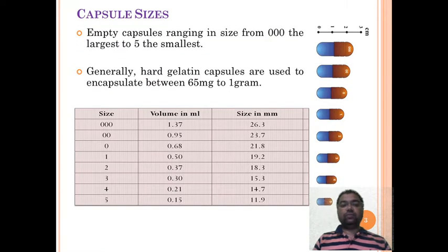Now firstly look at various sizes of capsules. Hard gelatin capsules range in size from triple zero, the largest, to five, the smallest. Generally hard gelatin capsules are used to encapsulate between 65 milligrams to one gram.